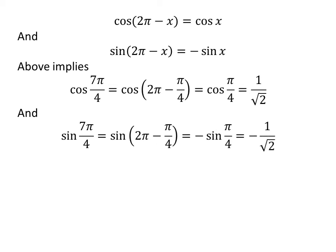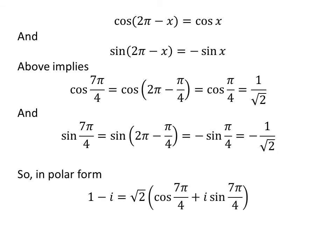So, this implies cosine of 7 times pi upon 4 is equal to 1 upon square root of 2, and sine of 7 times pi upon 4 is equal to minus 1 upon square root of 2. Therefore, the polar form of the complex number 1 minus i is square root of 2 times cosine of 7 pi upon 4 plus i times sine of 7 pi upon 4. The modulus is square root of 2 and the argument is 7 times pi upon 4.